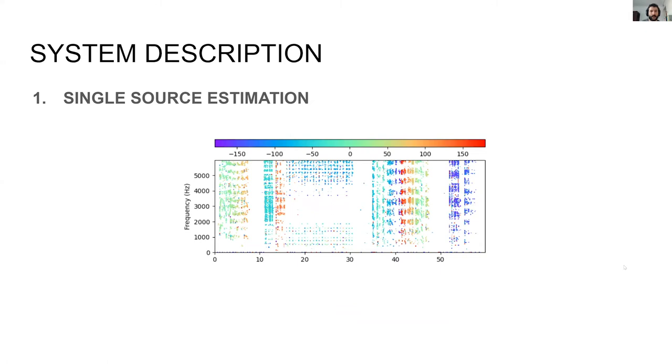In this spectrogram, we can observe the output of the single source estimation method. The horizontal axis depicts time in seconds, while the vertical axis represents frequency. The different colors are mapped to the estimated DOA of the given time frequency bin. The white spaces represent the regions where less or more than one source are present.